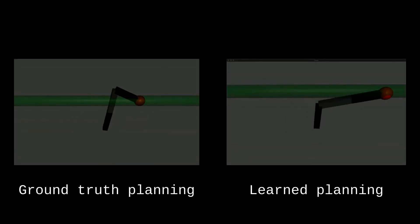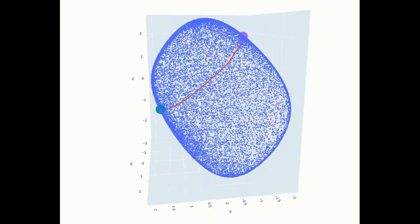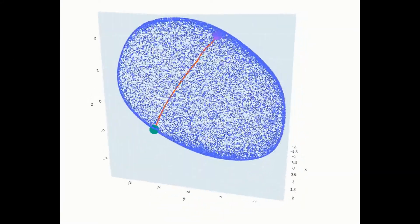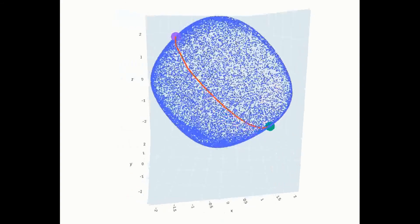Here, we show a 3-DOF arm constrained along the line. The motions planned adhere to the constraints well, as can be seen by the path closely staying on the surface.